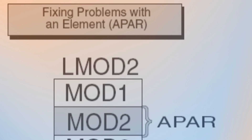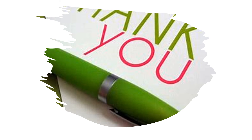In this diagram you can see Mod 2 containing an error. The processing of the APAR SYSMOD provides the modification for object module Mod 2. During the installation of the APAR SYSMOD, Mod 2 is updated in load module L-Mod 2. That's all for today. If you have any doubts please mention them in the comment box, and please like, share, and subscribe to this channel. Thank you all, bye.